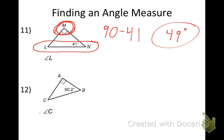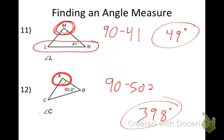Number 12. Same idea here. I have a right triangle. Tyler, what type of angle is that, then? 90 degrees. So if the angle there is 50.2, what's angle C going to be? 39.8. 90 minus 50.2 gets me 39.8 degrees.